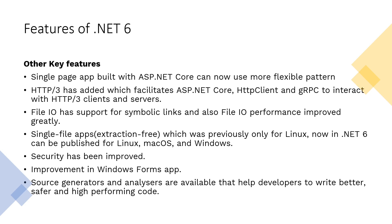Some other key features: single-page apps built in ASP.NET Core can now use more flexible patterns, which was not available in previous versions of .NET. Additionally, HTTP/3 support has been added, which facilitates ASP.NET Core, HTTP client, and gRPC to interact with HTTP/3 clients and servers. File I/O now has support for symbolic links and performance has improved greatly. Furthermore, in .NET 6, single-file app extraction-free publishing, which was previously only for Linux, can now be published for Linux, macOS, and Windows.